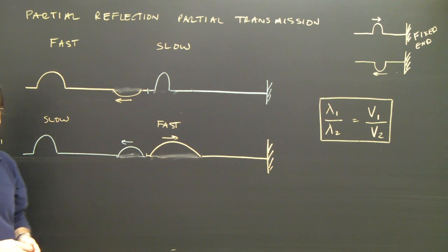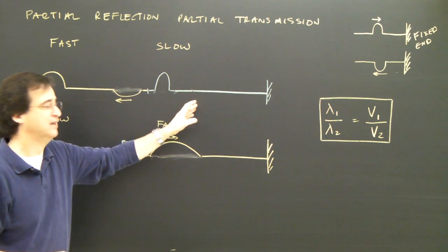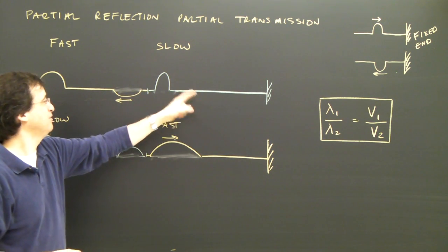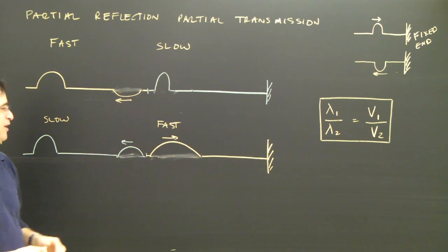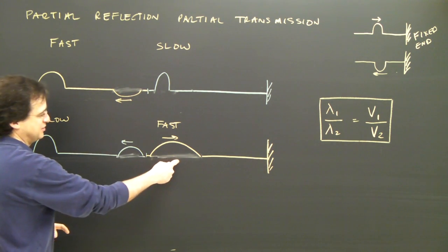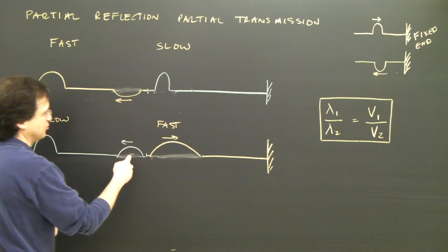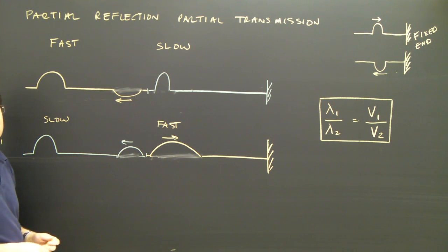So these are the only two cases you have. A wave going from faster to slower, you get transmitted wave and a reflected wave that's out of phase. From slower to fast, you get an increase in wavelength and the reflected wave is in phase.